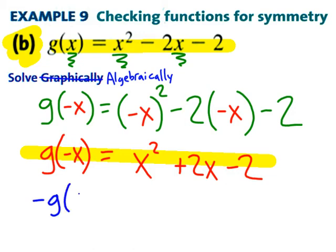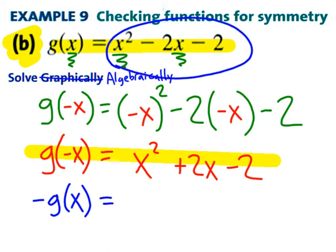Negative G of X, which would need to match this expression here in red in order for the function to be odd, equals this. Now, I'm going to look up here, and if I'm looking for negative G of X, I need to reverse the sign of all three of those terms. So, negative G of X. In fact, let me do this just for extra clarity. I'm going to start by just writing G of X equals X squared minus 2X minus 2.